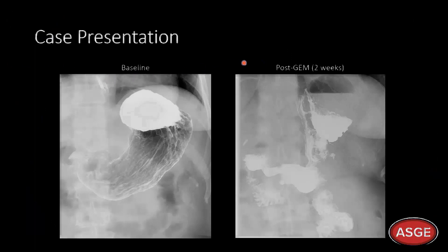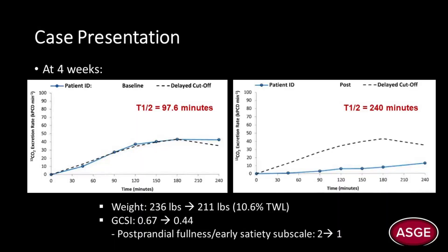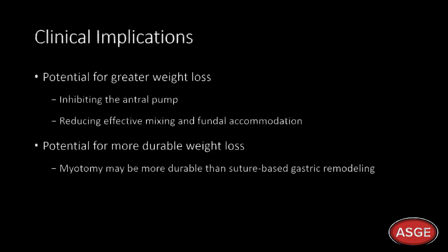The baseline upper GI series on the left and the two-week follow-up on the right showed a narrowed gastric body and reduced antral motility. Gastric emptying breath test showed a significant delay in emptying, going from 97.6 minutes to 216 minutes at two-week follow-up. The GCSI remained normal, however, with a doubling in the postprandial fullness and early satiety subscale. Her weight went from 236 pounds to 211 pounds, representing 10.6% total weight loss in one month.